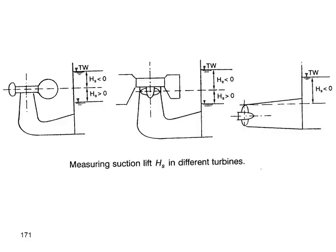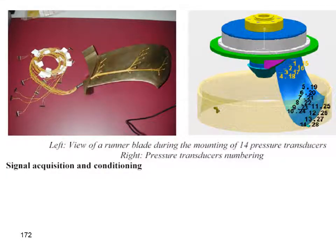If z is greater than zero, the turbine is positioned above the tail water level. If z is negative, the turbine is placed below the tail water. This applies to Francis turbines, propeller turbines, and bulb turbines alike.